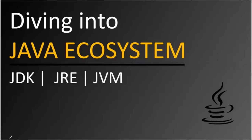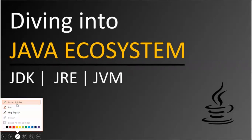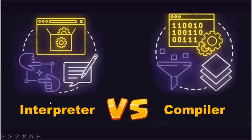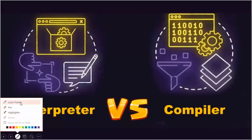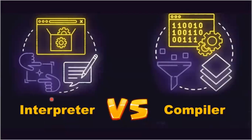Before understanding JDK, JVM, and JRE, we need to understand two important concepts: interpreter and compiler. In C and C++, you find a compiler. In Java, you also have an interpreter. Both are software — a compiler is a piece of software that takes high-level language code and converts it into machine code.